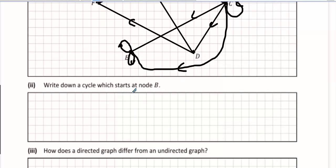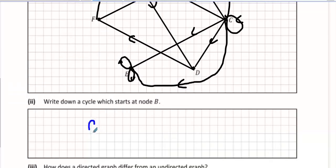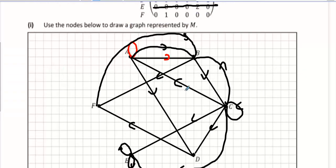Write down a cycle which starts at node B. Any cycle that starts at node B. Whoa, that's soft, isn't it? B, C. B, C, B. And the other ones? I'll just do one more basic one. B, C, A, B.